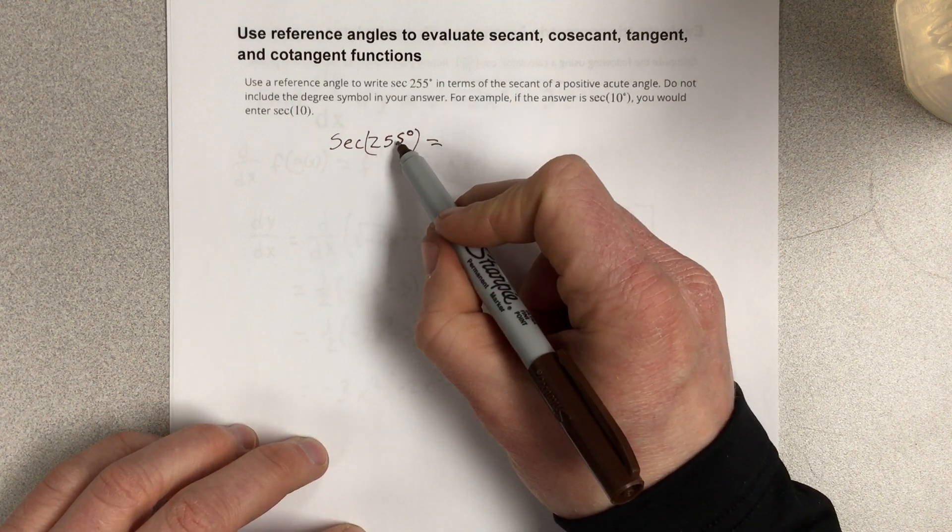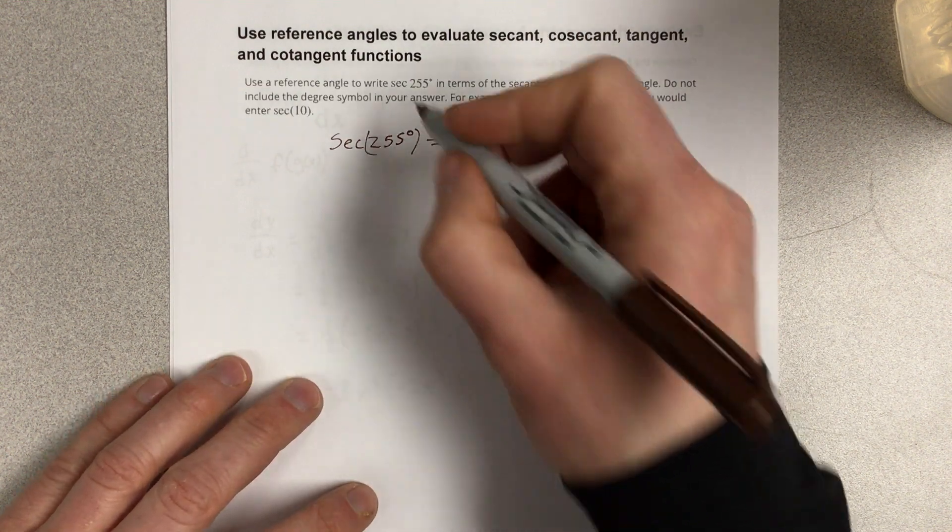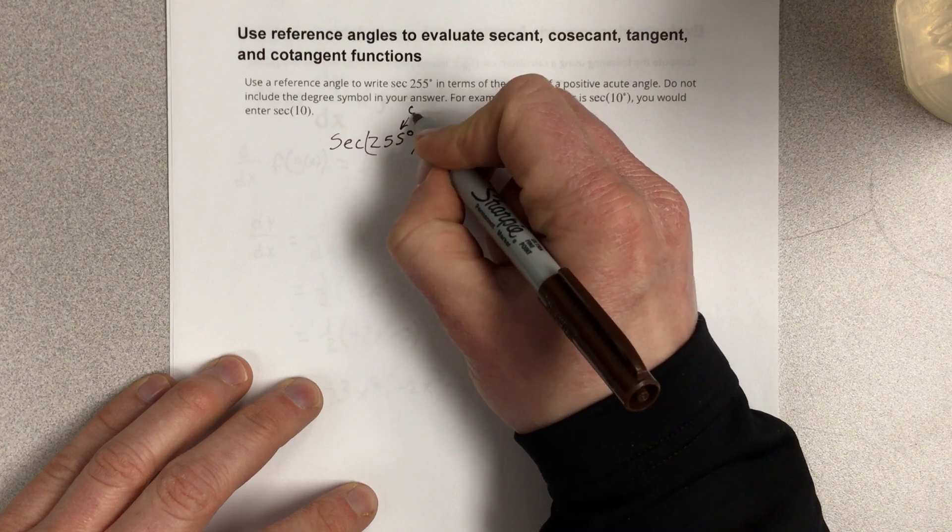First of all, where is 255 degrees? That's quadrant 3. I'm going to label that this is quadrant 3.